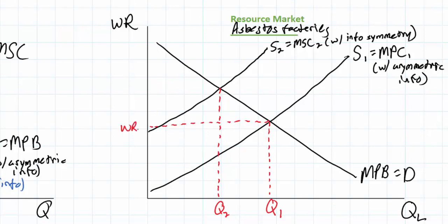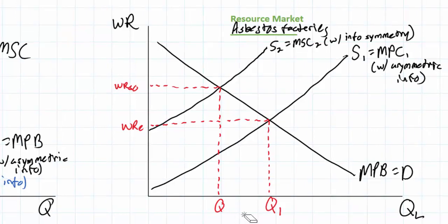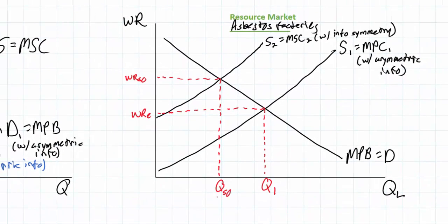So the equilibrium wage rate — call this WRE, wage rate equilibrium — is much lower than the socially optimal wage rate. Q2, the socially optimal quantity, is less than the equilibrium quantity of employment in this labor market. So we can say there are too many workers employed in these toxic environments.